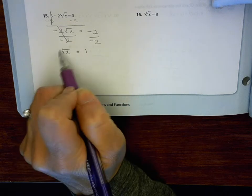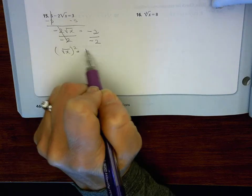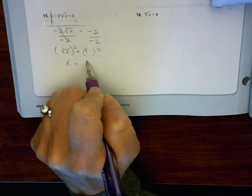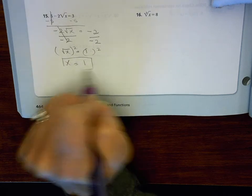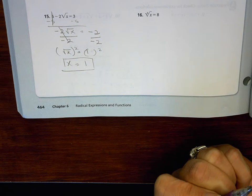So there's nothing outside of the radical anymore. So now I want to square both sides. So then x equals 1 squared, which is 1. Okay, and that's for objective 5.